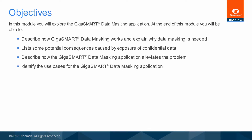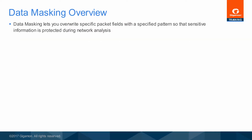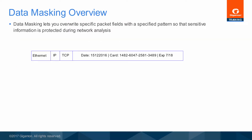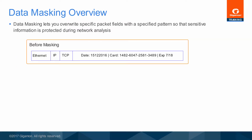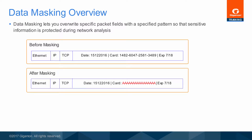Identify the use cases for the GigaSmart Data Masking application. Data masking lets you overwrite specific packet fields with a specified pattern so that sensitive information is protected during network analysis. In this example, you can see the credit card number is overwritten with a pattern of all A's after data masking.